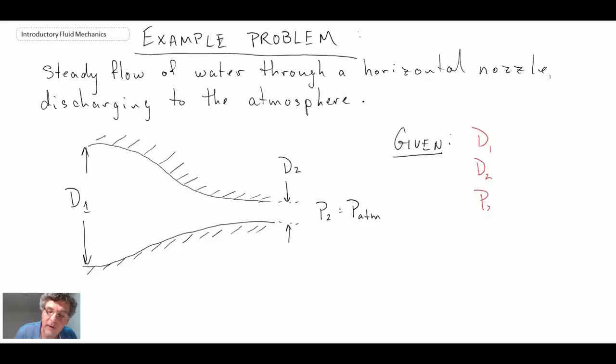We're told P2, which is equal to the atmospheric pressure, and we're told Q, which is the volumetric flow rate. So we have point one here and point two here.